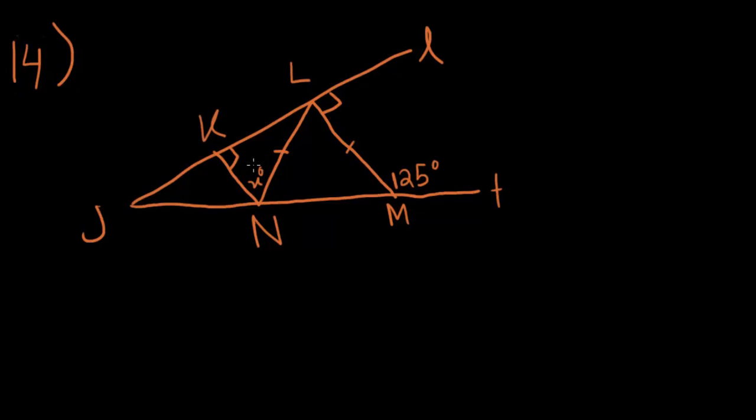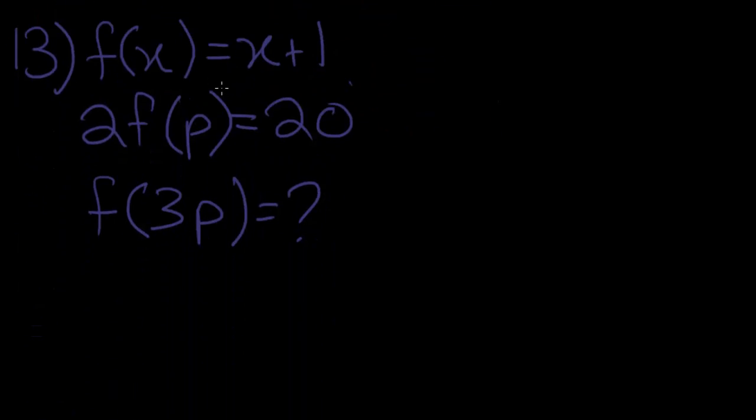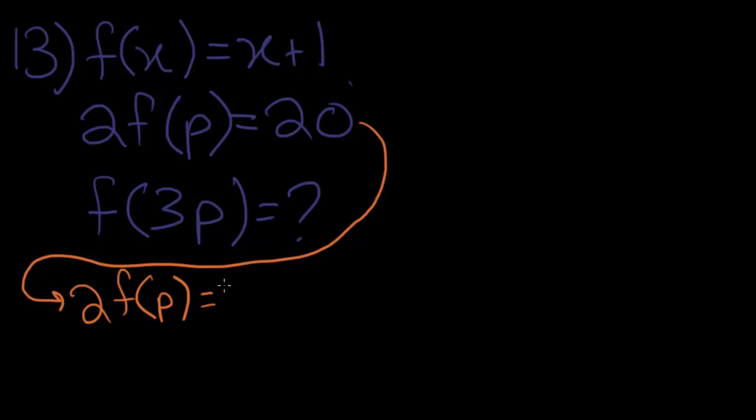I accidentally drew number 14 thinking it was number 13, but since I already drew it, we'll do it in this video after number 13. So, let the function f be defined by f of x is equal to x plus 1. If 2f of p is equal to 20, what is the value of f of 3p? Okay, so, let's take this equation into hand. Let's just use orange, it looks bright against this very dark blue purple. So, 2f of p will be equal to 2 times p plus 1 because we are taking into account this equation right here. That f of x will be equal to x plus 1. So, f of p will be equal to p plus 1. 2f of p will be equal to 2 times p plus 1.